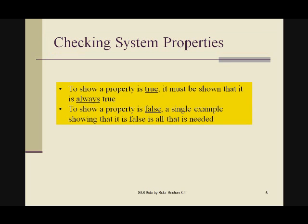To show a property is true, it must be shown that it is always true. To show a property is false, a single example showing that it is false is all that is needed. What does this mean? It means that you can prove something false with a single example, but you can't prove something true with a thousand examples. That simply isn't going to work.